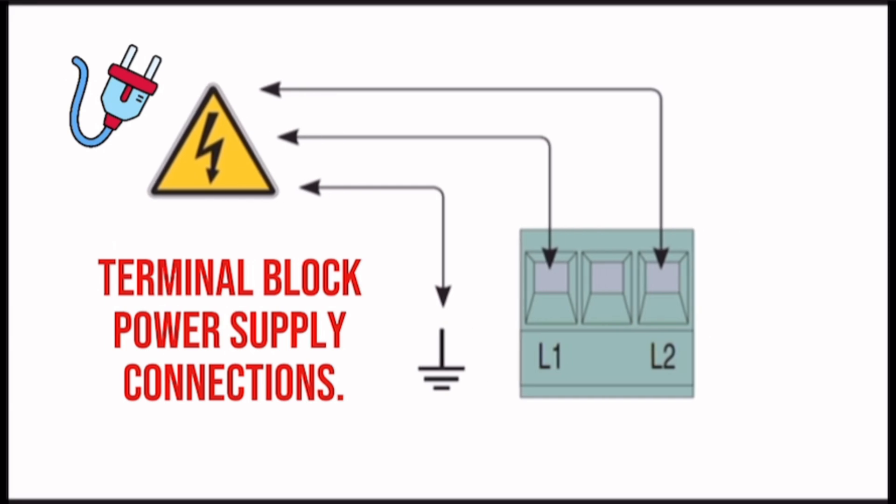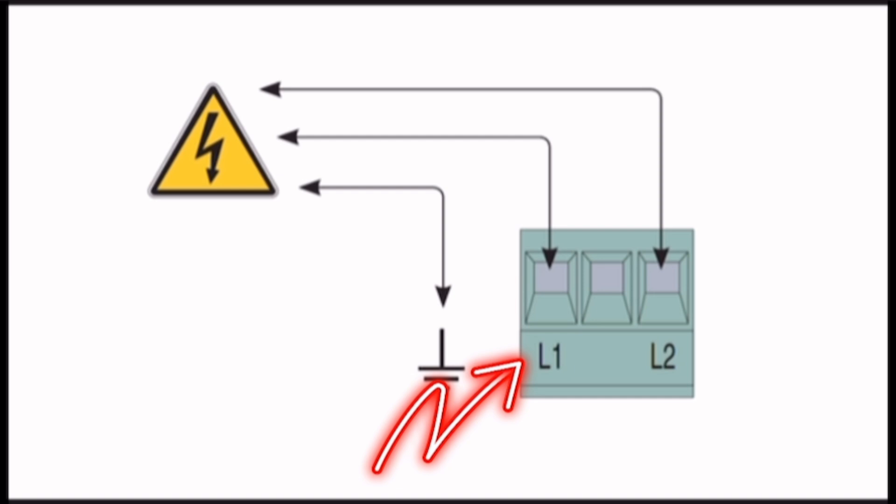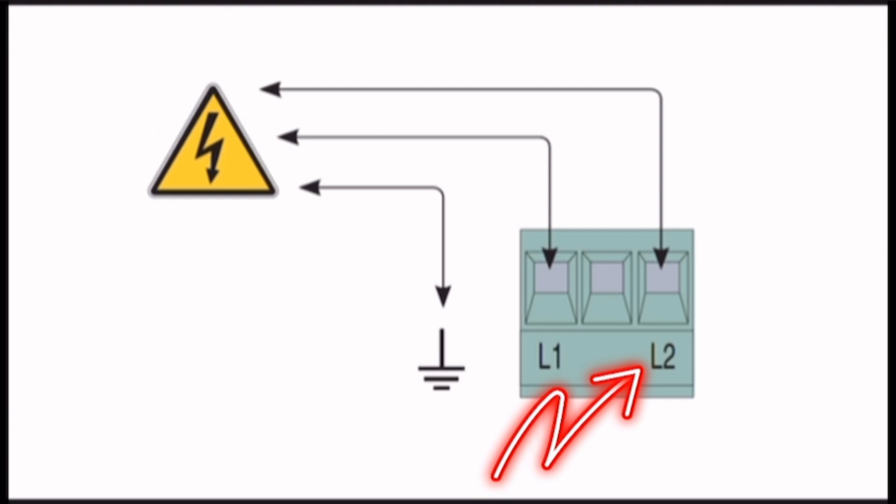Terminal Block Power Supply Connections: Terminal L1 - Live terminal for the primary power supply, typically 230V or 110V AC. L2 - Neutral terminal for the power supply, completing the AC circuit. Ground symbol - A grounding connection that ensures electrical safety by preventing voltage surges or leaks.